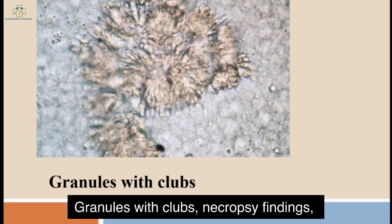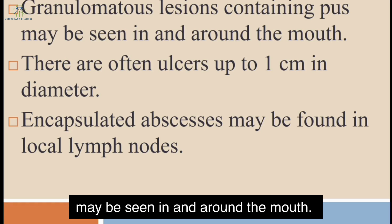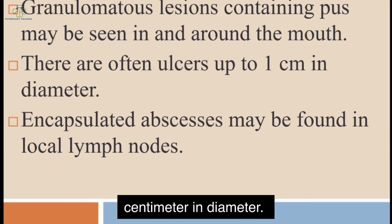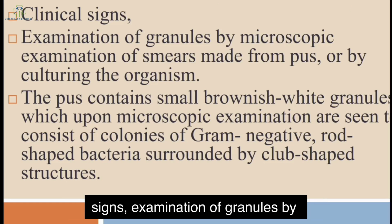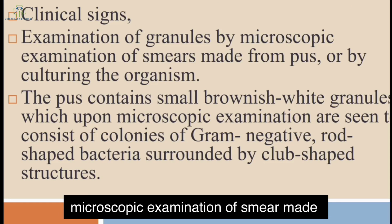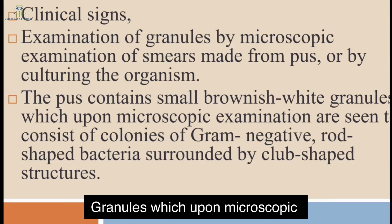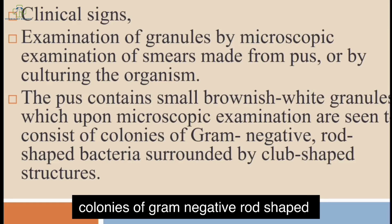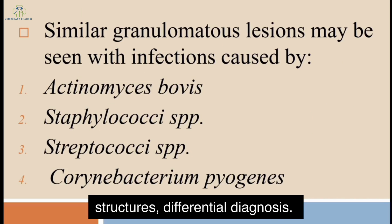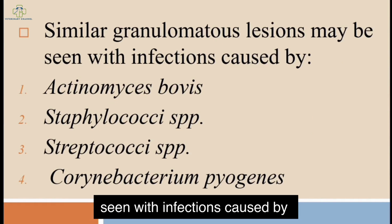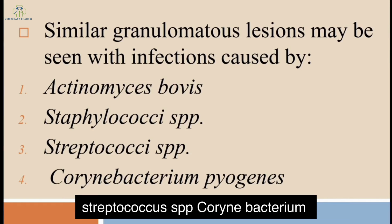Necropsy findings: granulomatous lesions containing pus may be seen in and around the mouth; there are often ulcers up to 1 centimeter in diameter, and encapsulated abscesses may be found in local lymph nodes. Diagnosis is based on clinical signs and examination of granules by microscopic examination of smears made from pus, or by culturing the organism. The pus contains small brownish-white granules which, upon microscopic examination, are seen to consist of colonies of gram-negative rod-shaped bacteria surrounded by club-shaped structures. Differential diagnosis: similar granular lesions may be seen with infections caused by Actinobovus, Staphylococci spp., Streptococci spp., and Corynebacterium pyogenes.